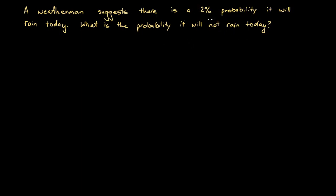Because if it's just a 2% probability it will rain today, the opposite of that, like the complement of that event, is 98%. And you will be correct.